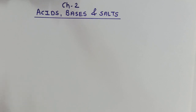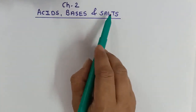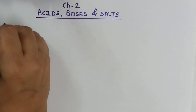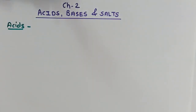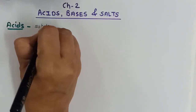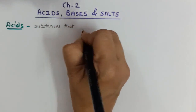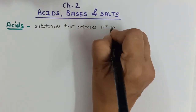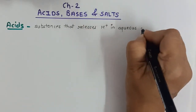For convenience, in the first part we will discuss acids and bases, and salts we will study separately. So let us begin. First of all, what do you mean by acids? Acids are the substances that release H⁺ ions in aqueous solution — that means when they are dissolved in water.